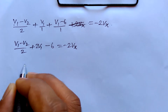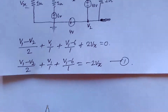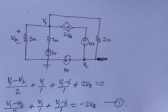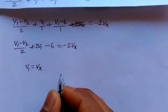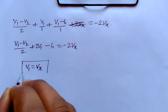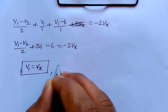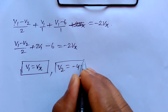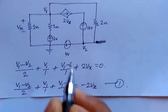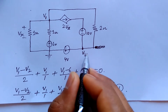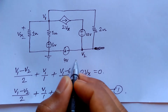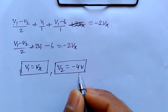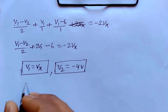From the circuit, we can identify two key constraints. First, V1 equals Vx — that is clearly visible from the circuit. Second, V2 equals minus 4 volts. You can see from the circuit there is a 4 volt source, but it is connected in the inverse direction — positive is here and negative is here — so V2 equals minus 4 volts.